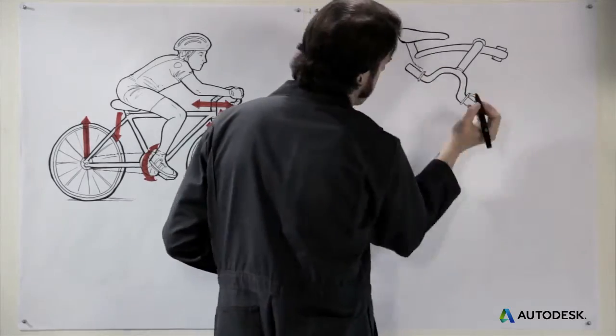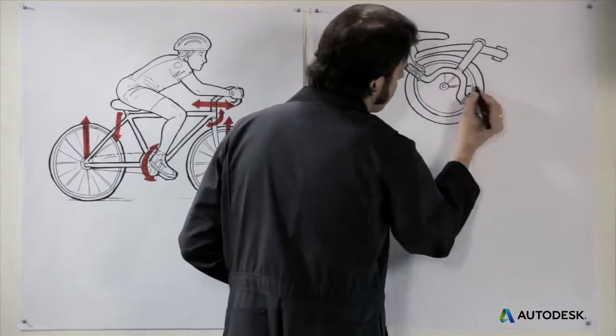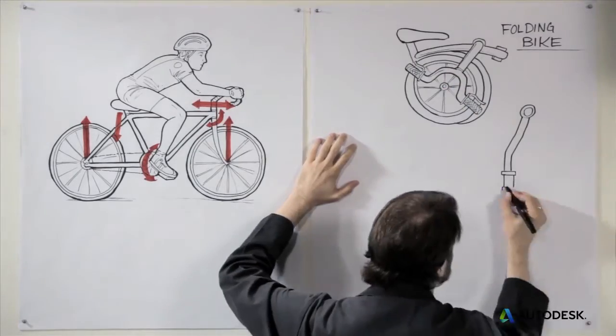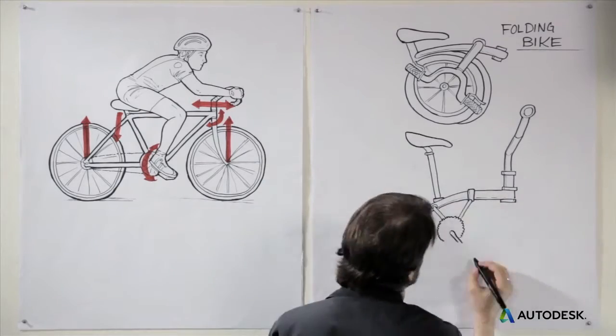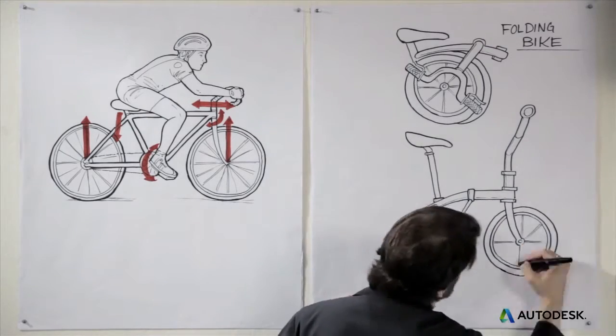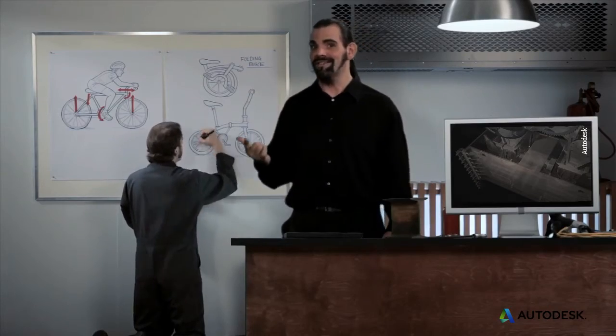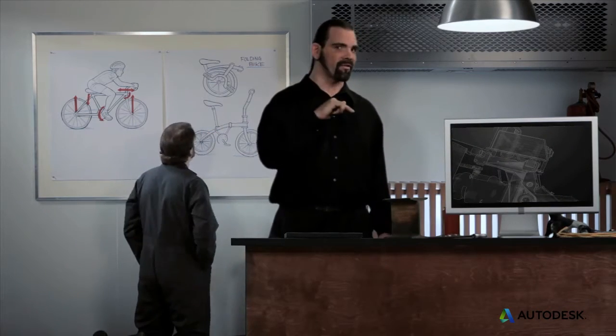Have you ever noticed that folding bicycles often weigh as much or more than normal bicycles, even though they're smaller? They often have wider and thicker tubes than a diamond frame bike, because their frame geometries are less optimized to where the forces are being exerted.